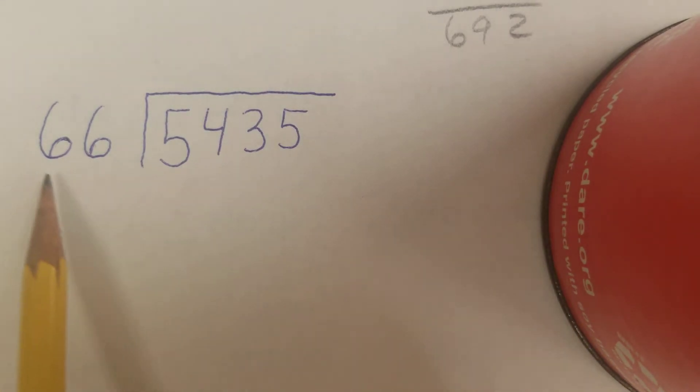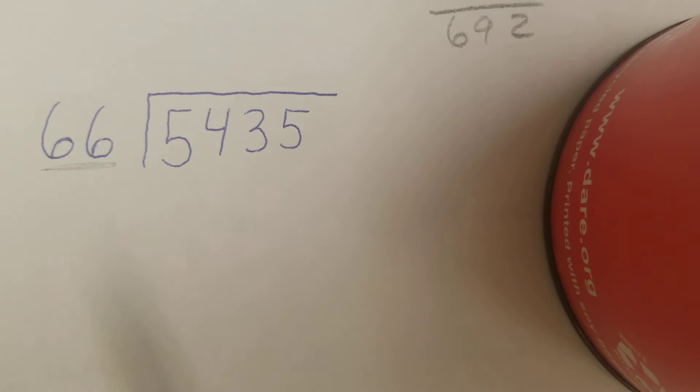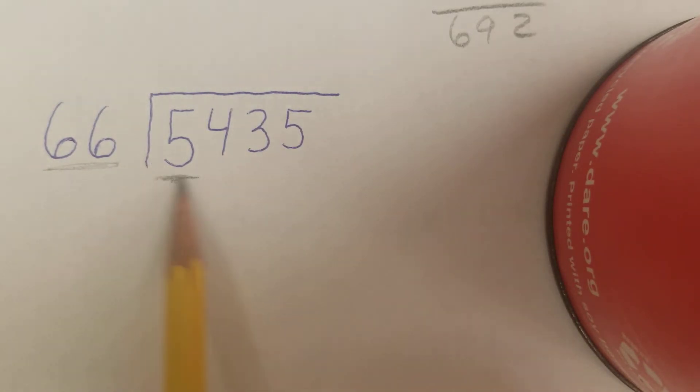This time I'm skip counting by 66. 66 will not go into 5. 66 will not go into 54. But 66 will go into 543. I look at my first number, 6. It won't go into 5, but it will go into 54 nine times. But I think 9 might be too big. So I'm going to start out with 8.